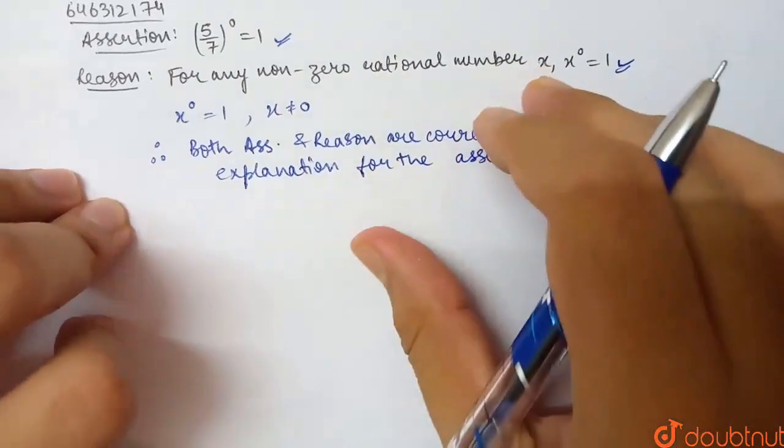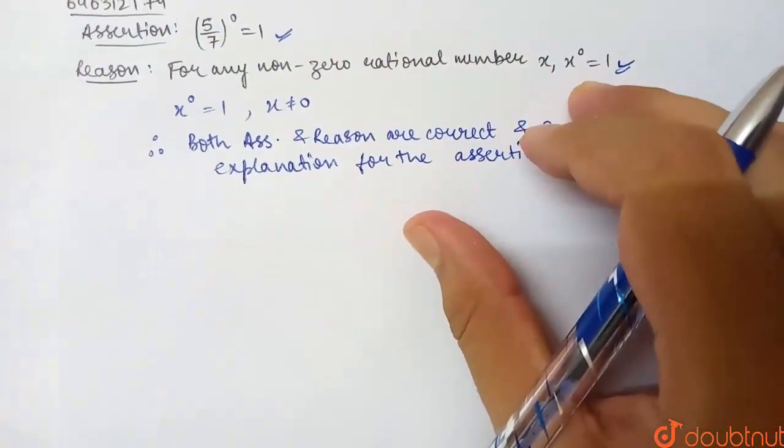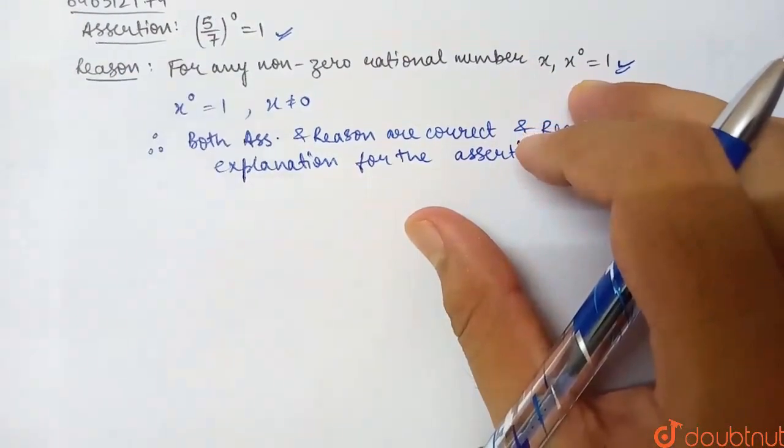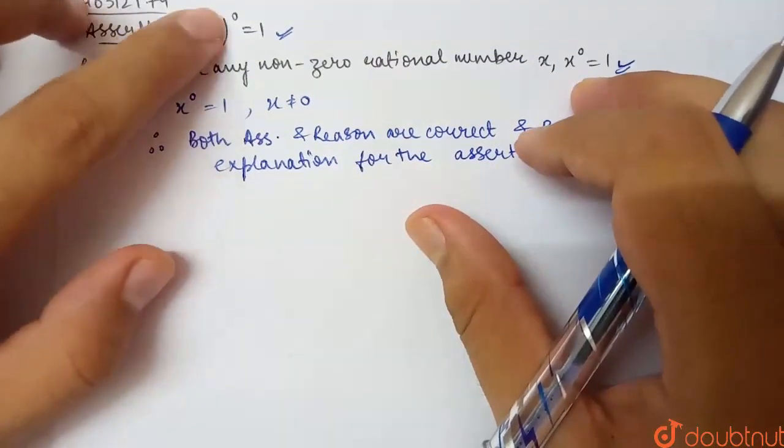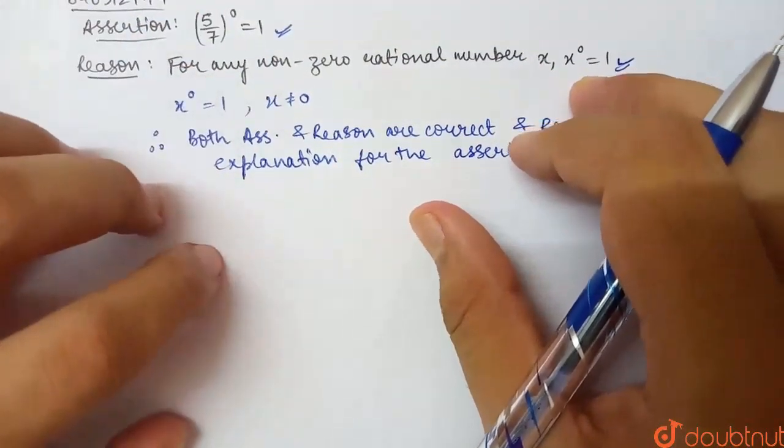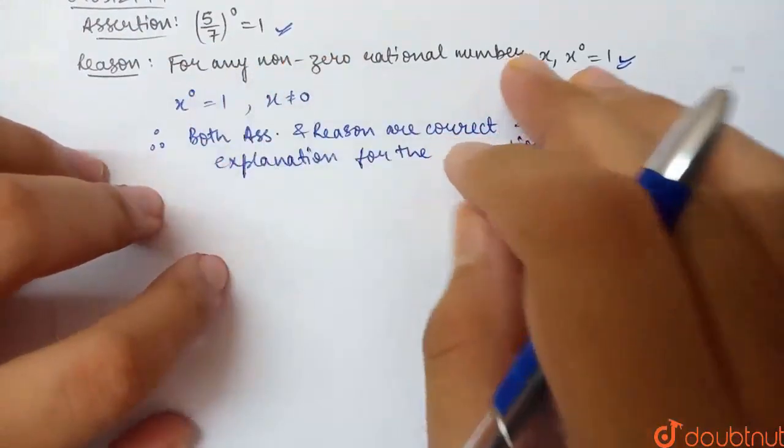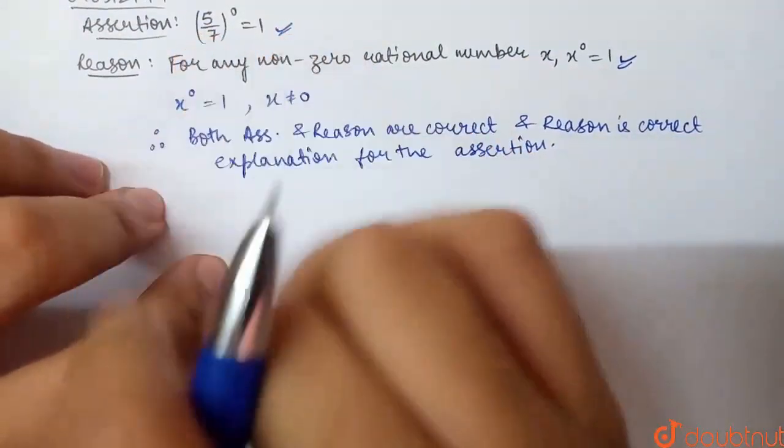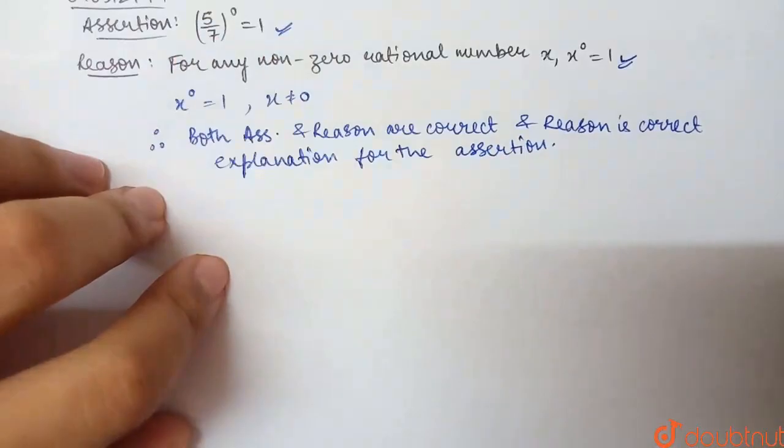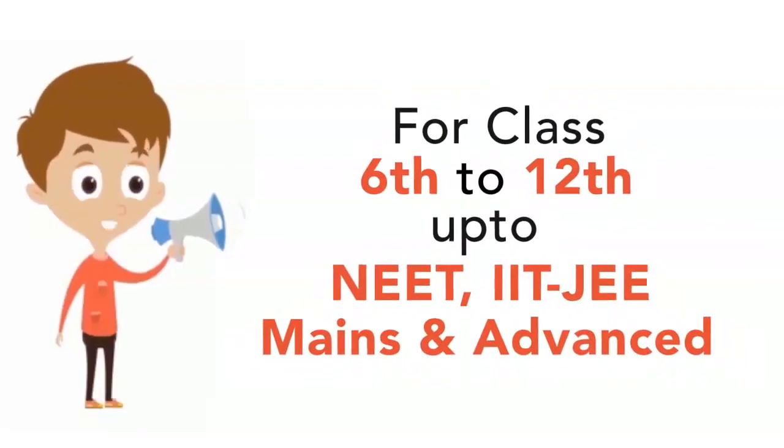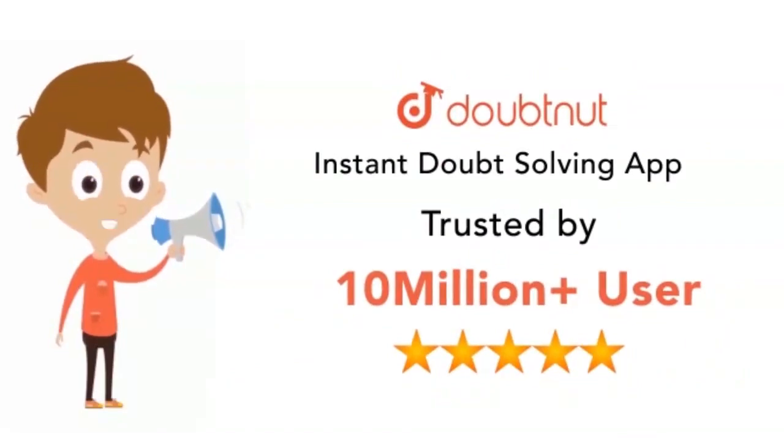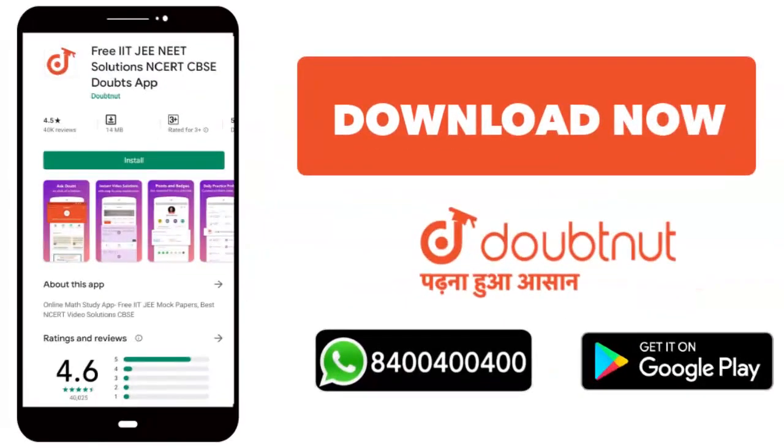So what do we see here? That anything to the power 0 is equal to 1. And what is the assertion here? 5 by 7 to the power 0. If this is non-zero, then to the power 0 equals 1. This is the reason given, which is the correct explanation for why the assertion is true.